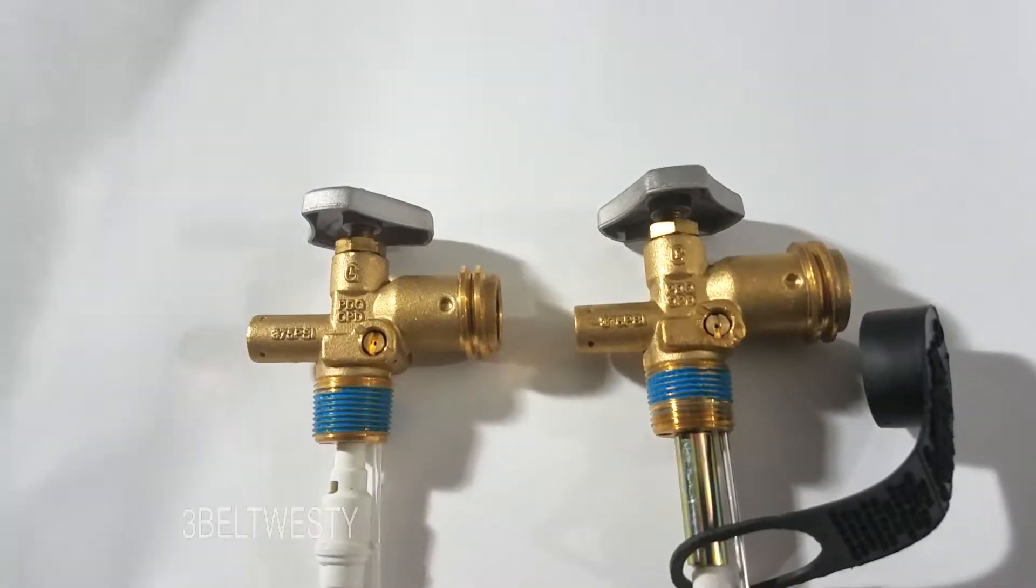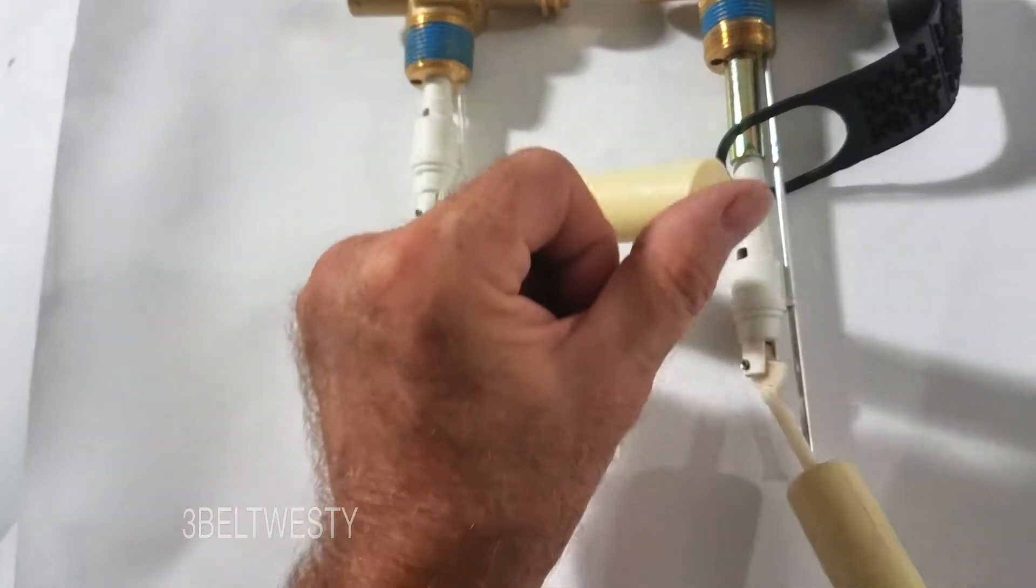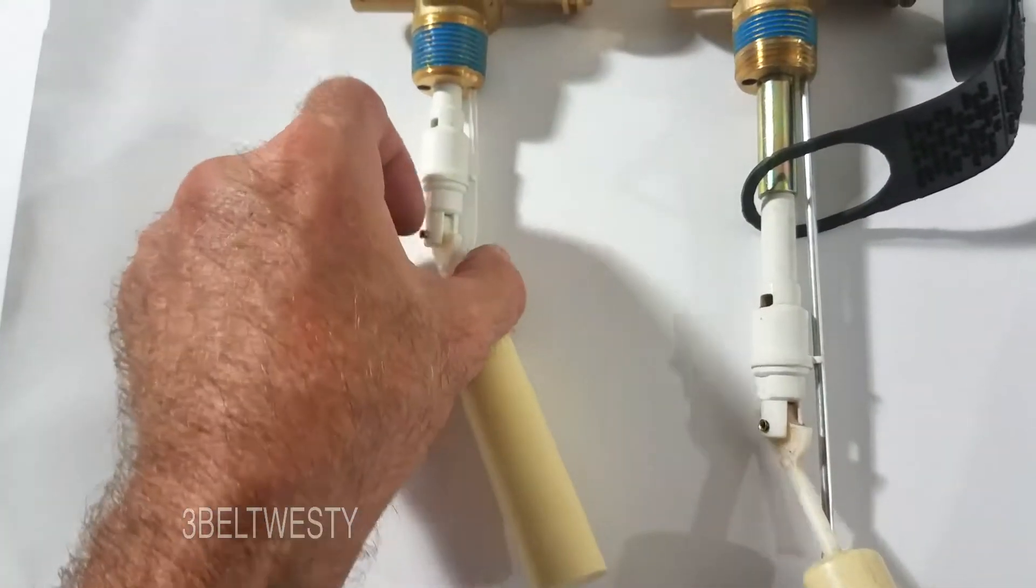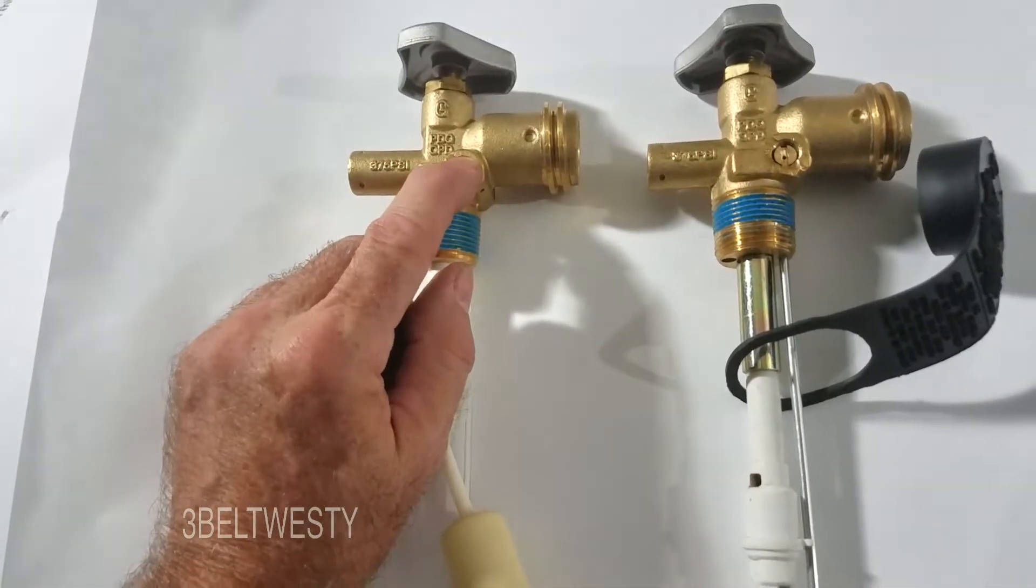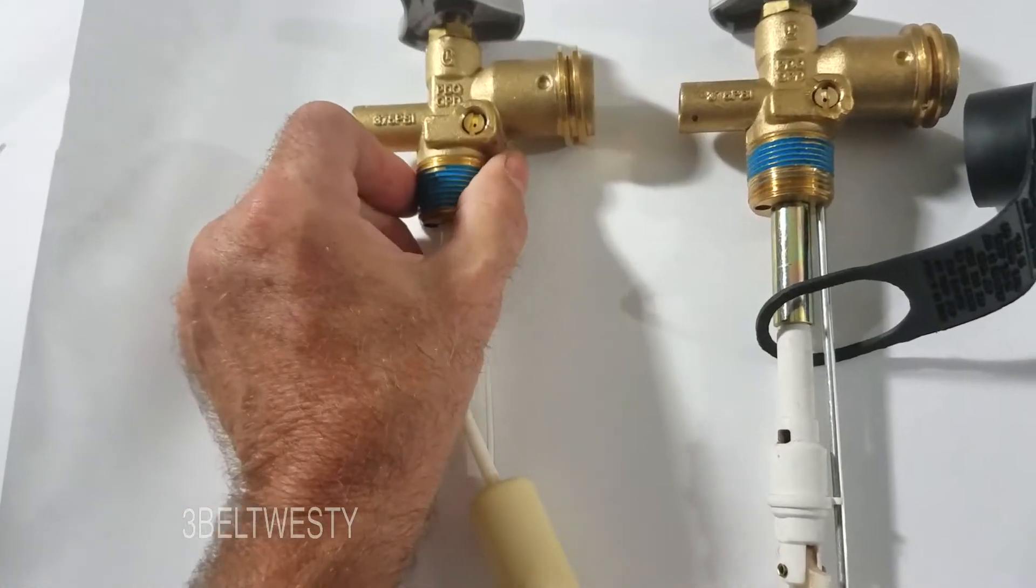The OPD valve. This is a 20 pound bottle, this is the valve that shuts it off. This is the overflow, little tube here. This is what you undo to let the liquid out.